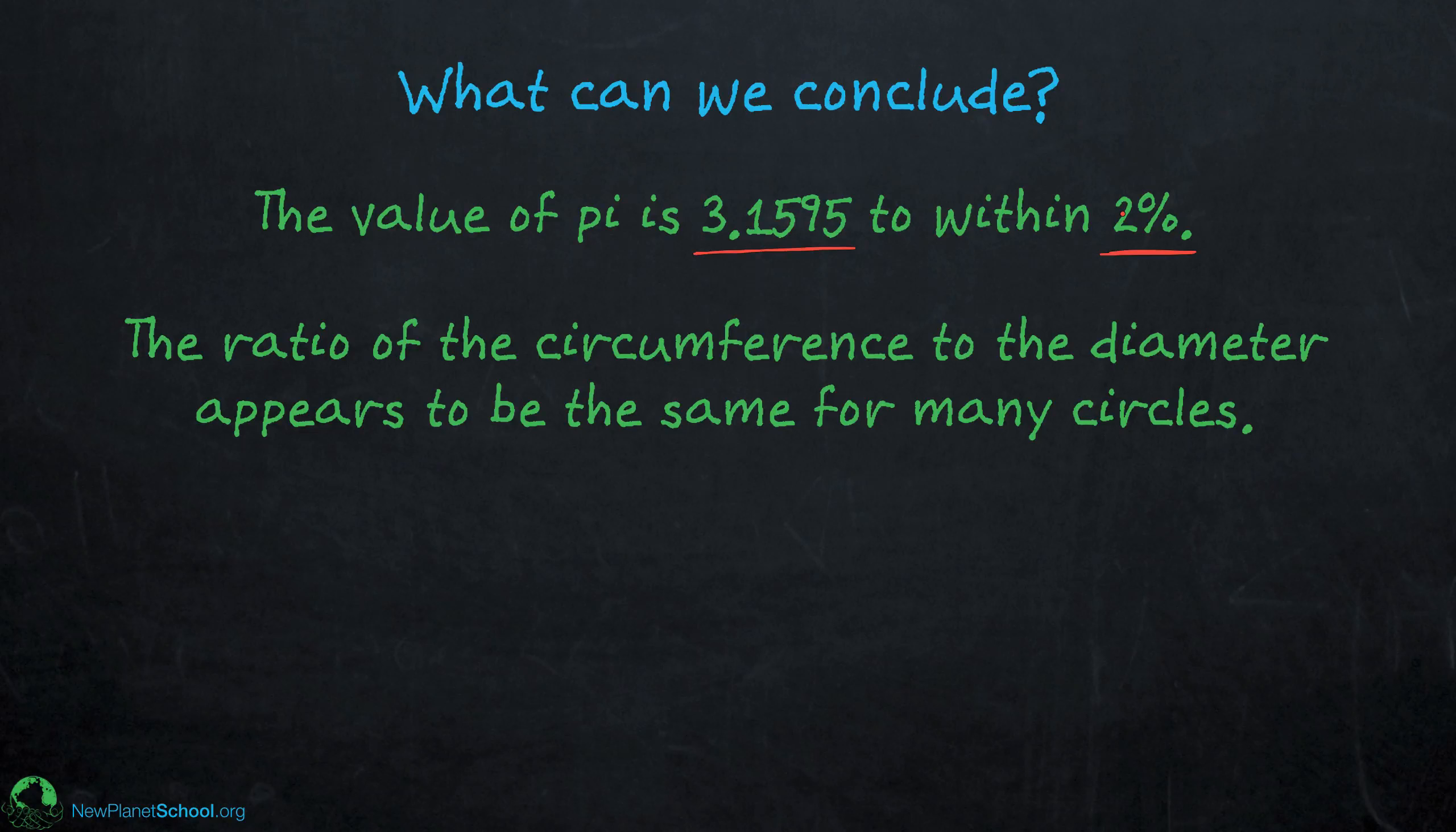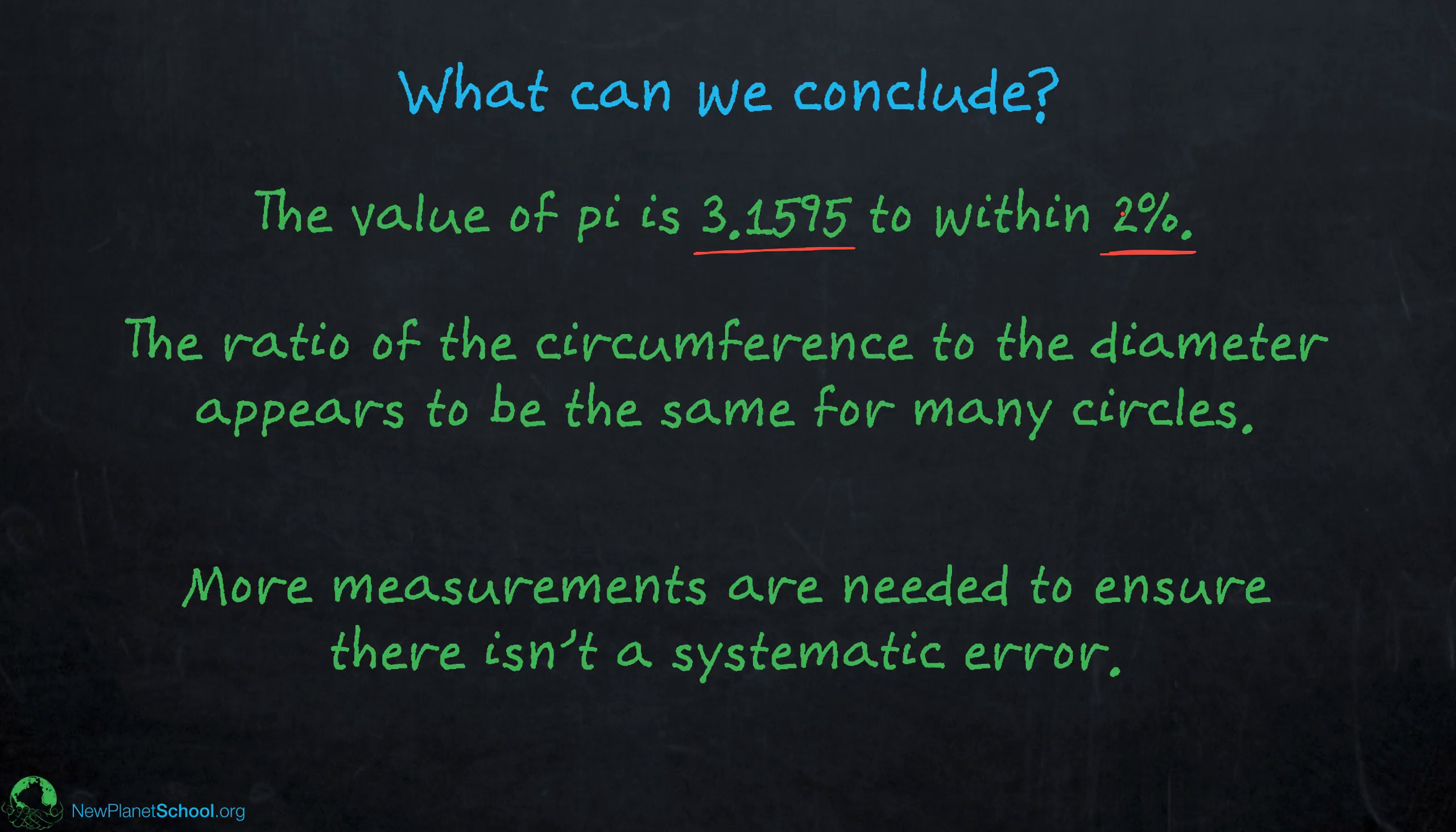Now, of course, since there's measurement error, we can't say that exactly, but it seems to be strong indication that this rule is true. And then the third thing is that probably more measurements are needed. We only made six, we had six different objects, they were kind of close in size. One wonders if we used different tape measures, would we have ruled out a systematic error?